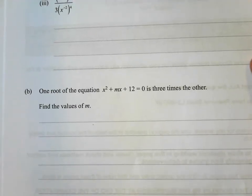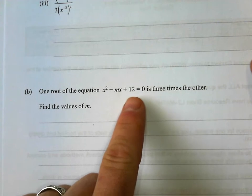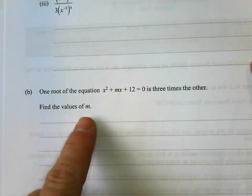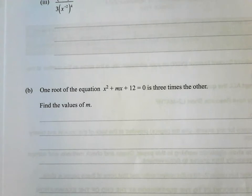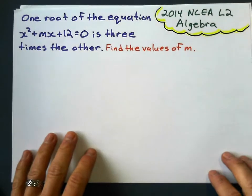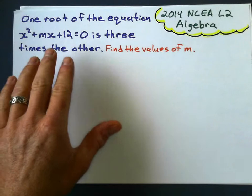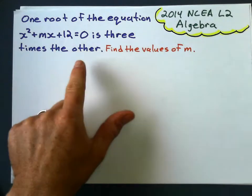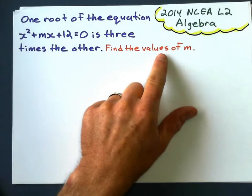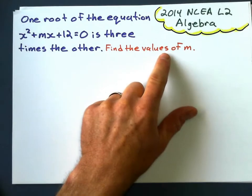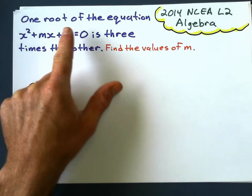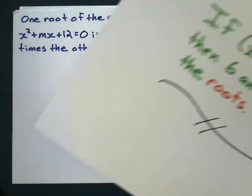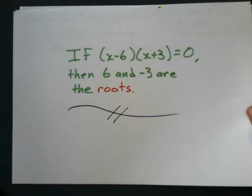So what it says is: one root of the equation x squared plus mx plus 12 equals 0 is 3 times the other. Find the values of m. We know there's going to be two possible values of m. Just a reminder of what roots are in an equation.